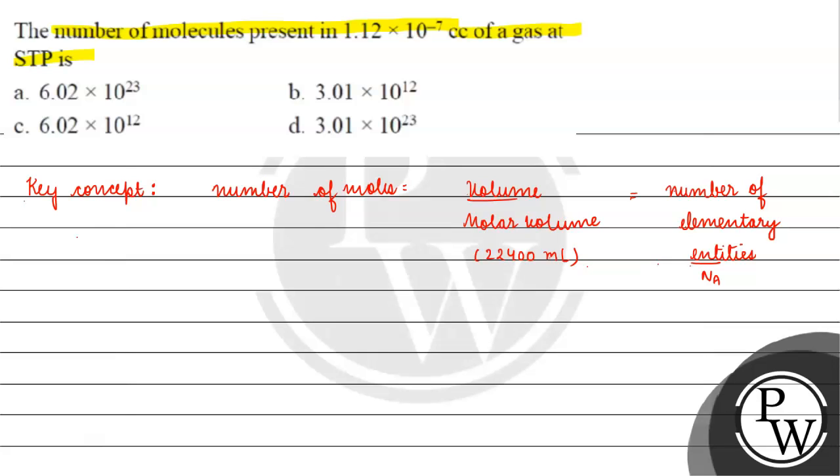Now, we are asked for the number of molecules in 1.12 into 10 raised to the power minus 7 centimeter cube of a gas. If we talk about it, 1 centimeter cube is basically equals to 1 mL.